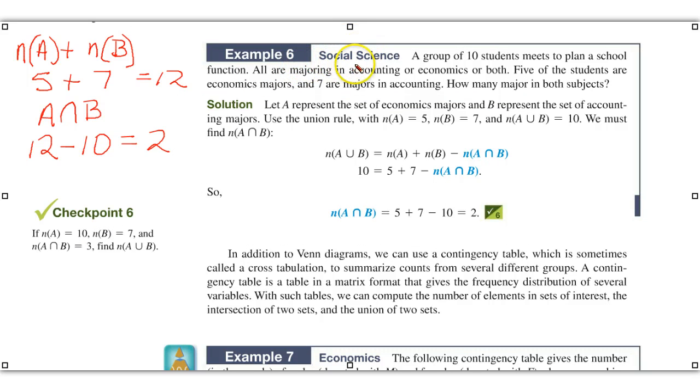In example six, they're giving us sort of an easy example. There are ten students altogether. And we find that five are economics majors. Seven are majors in accounting. And they're asking us, how many major in both subjects? Well, we need to add those in accounting, which are the seven, with the economics. Five plus seven is twelve. And now we're looking for those that intersect, that are taking both. Well, we subtract our total from those majors, from the total number of students, and we get two. So those are the ones that are intersecting.